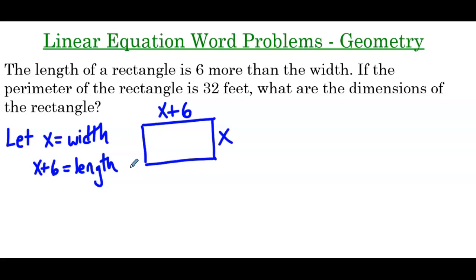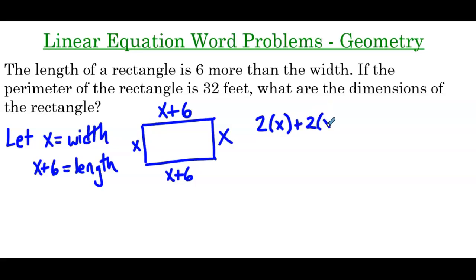It says the perimeter of the rectangle is 32 feet. The perimeter of a rectangle is the sum of all of its sides. In a rectangle, these two sides are equal, so this would also be x, and these two sides are equal, so this would be x plus 6 as well. Turning this into an equation, we have two sides of length x plus two sides of length x plus 6 equals 32 feet. If you want, you can write x plus x plus x plus 6 plus x plus 6 and come to the same equation.